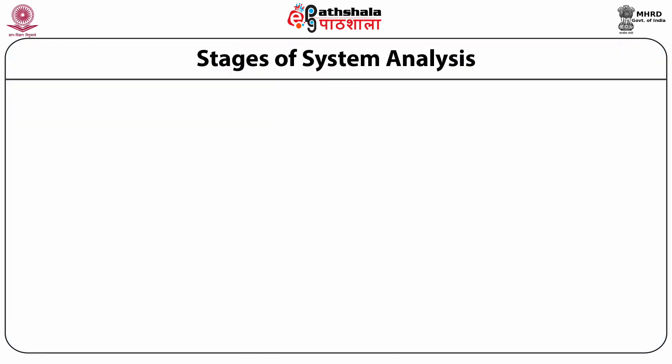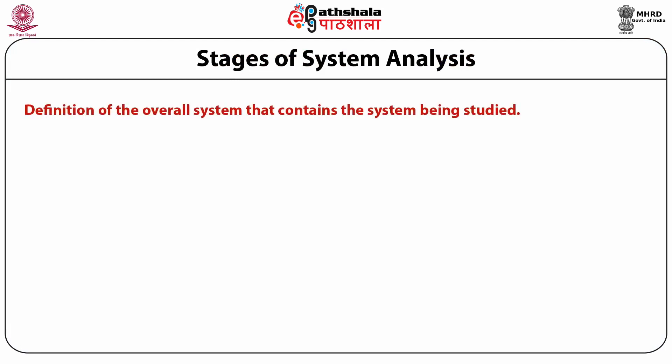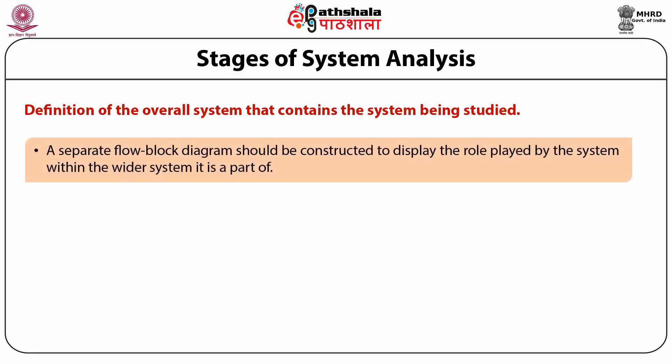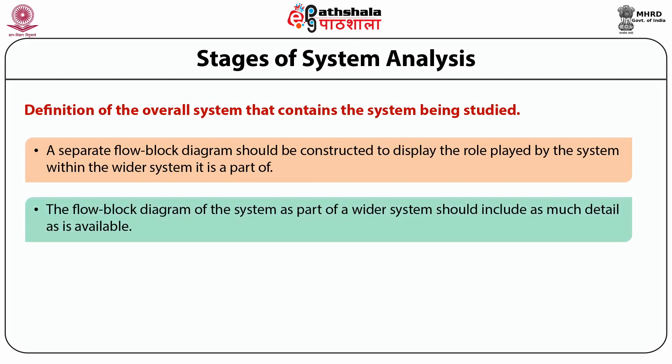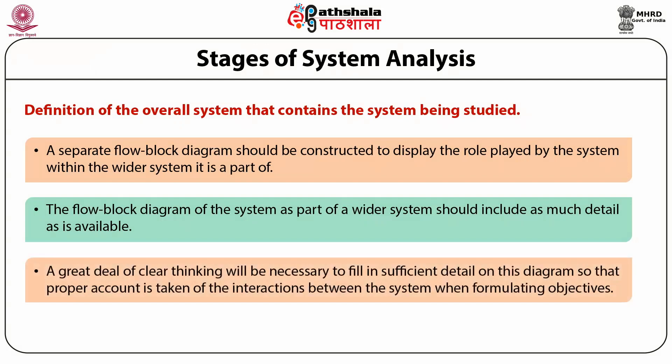We will now come to the fourth step, which is definition of the overall system that contains the system being studied. We first create a separate flow block diagram to display the role played by the system within the wider system. This flow block diagram of the system as part of the wider system should include as much detail as available, and a great deal of clear thinking will be necessary to fill in sufficient detail.